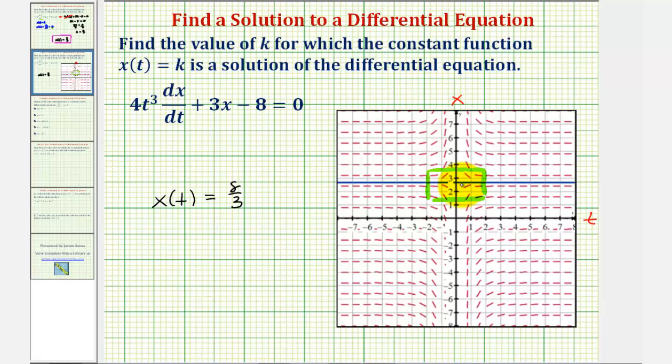The same thing is true to the right of the x-axis. Notice how above the horizontal line, the slope of the tangent lines are negative, and below the horizontal line, they're positive. Therefore, it's probably safe to assume that at x(t) = 8/3, the slope of the tangent lines could be zero.